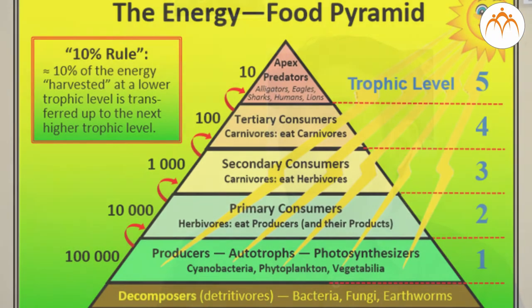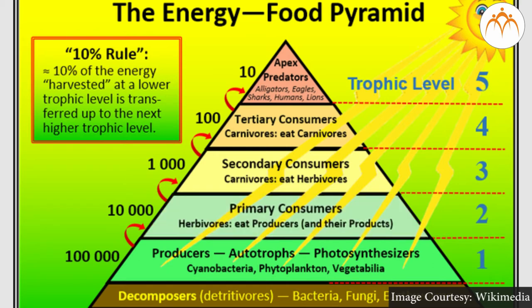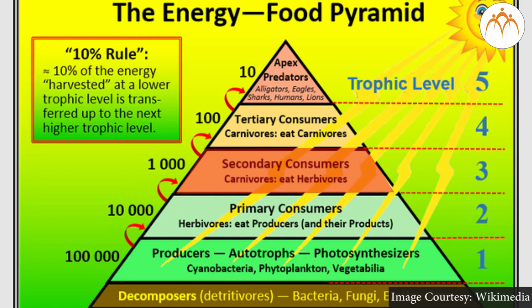But then what term do we use for other organisms of the biotic community? Organisms other than plants and photosynthetic microorganisms are termed as consumers. Herbivores which directly depend on plants for their food are termed as primary consumers. Carnivores which use other animals as source of food are termed as secondary and tertiary consumers.